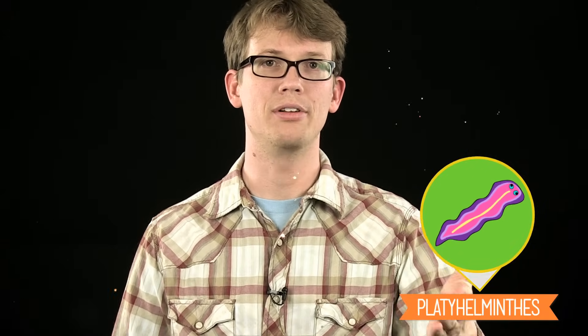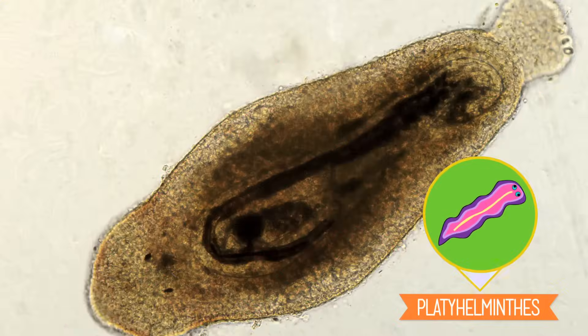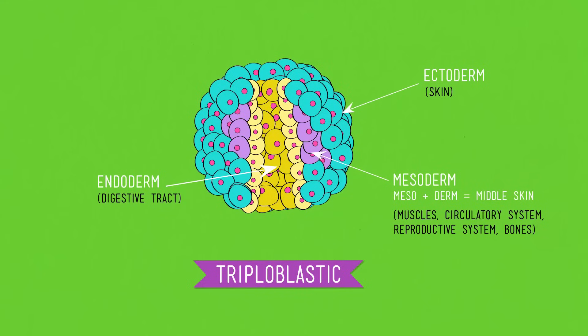We can see evidence of this breakthrough in Platyhelminthes — the phylum of soft, unsegmented worms that includes flatworms, planaria, tapeworms, and flukes. These are a big deal because they're the oldest existing phylum that is triploblastic, meaning they have three germ layers. In addition to an endoderm and ectoderm, their embryos form a mesoderm. It might sound like just another piece of toast and turkey on a club sandwich, but this development changes everything.